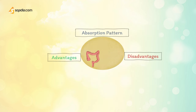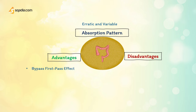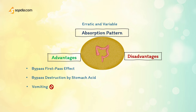Next is the rectal route. Its absorption is erratic and variable. Advantages include partially bypassing the first-pass effect, bypassing destruction by stomach acid, and it is ideal if a drug causes vomiting or for patients who are vomiting or comatose. Disadvantages include irritation to the rectal mucosa and it is not a well-accepted route.